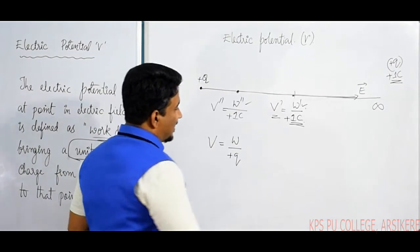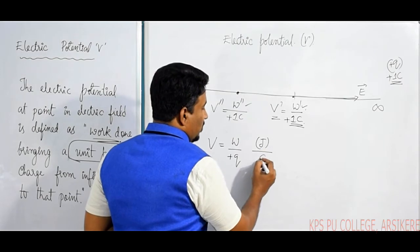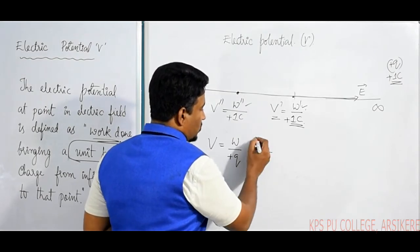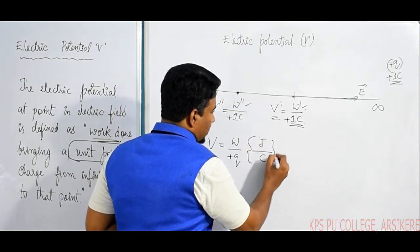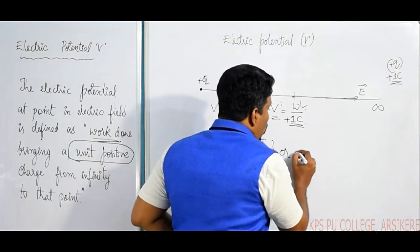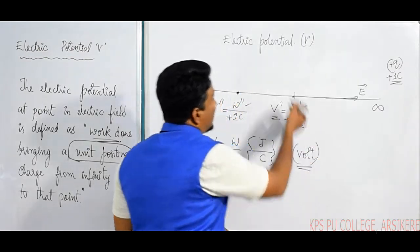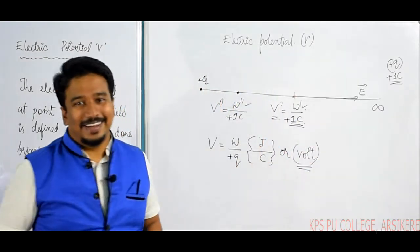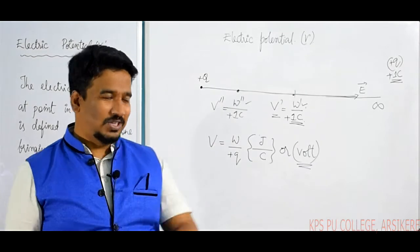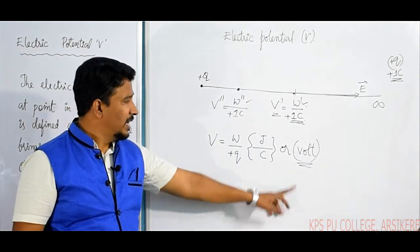The unit of work done is Joules, and the unit of charge is Coulombs, so the unit of Electric Potential is Joules per Coulomb. Am I clear with this concept? The unit is Joules per Coulomb.